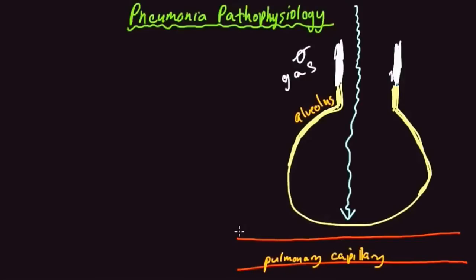Pulmonary capillaries run like a little mesh network across and around these alveoli. The very close proximity — this tiny microscopic gap between the alveoli and the pulmonary capillaries — allows diffusion of gases to take place. The blood in your pulmonary capillaries is coming from your body, where it has been used by cellular metabolism. This blood has gone back to your lungs to get refilled with oxygen and to dump off CO2, so it has high CO2 and low O2.